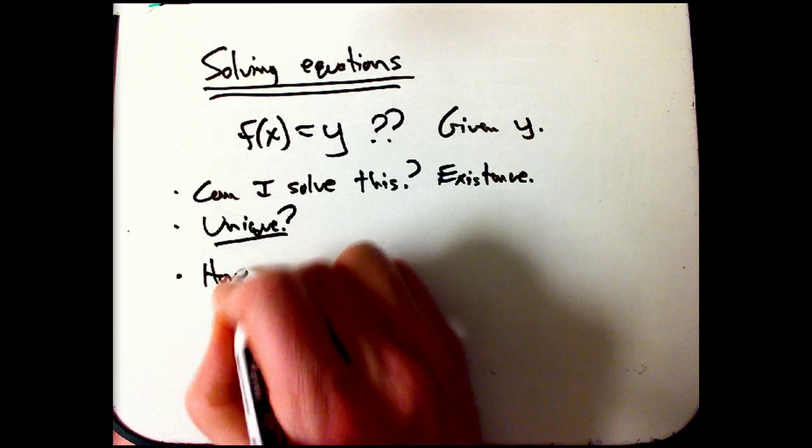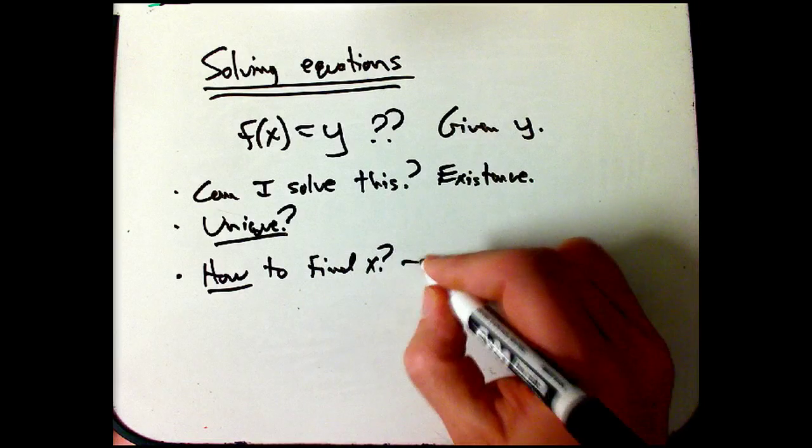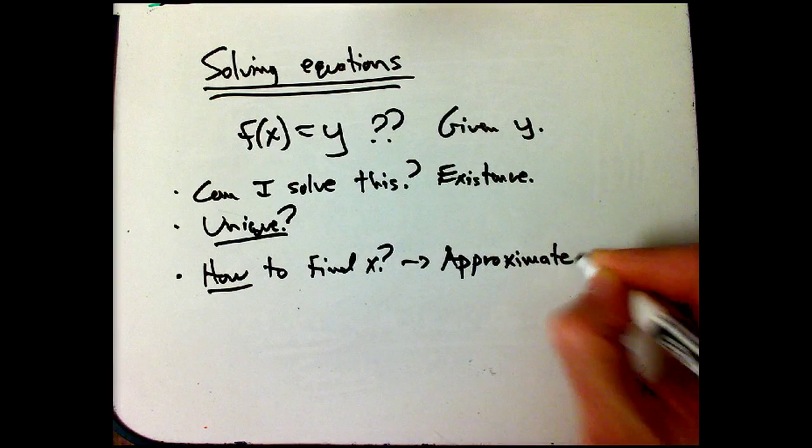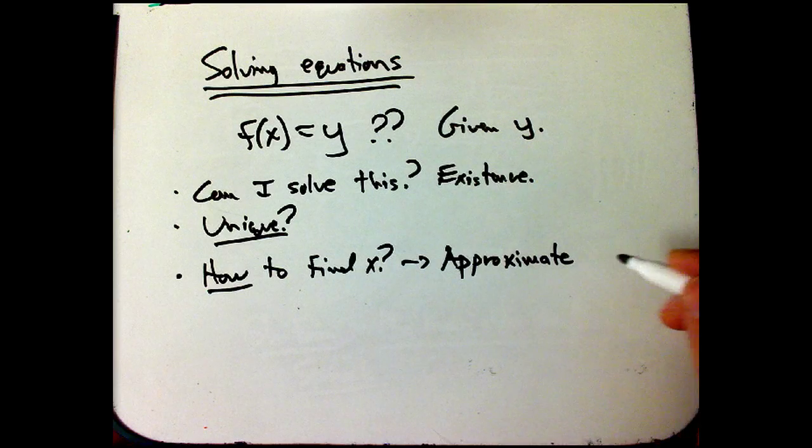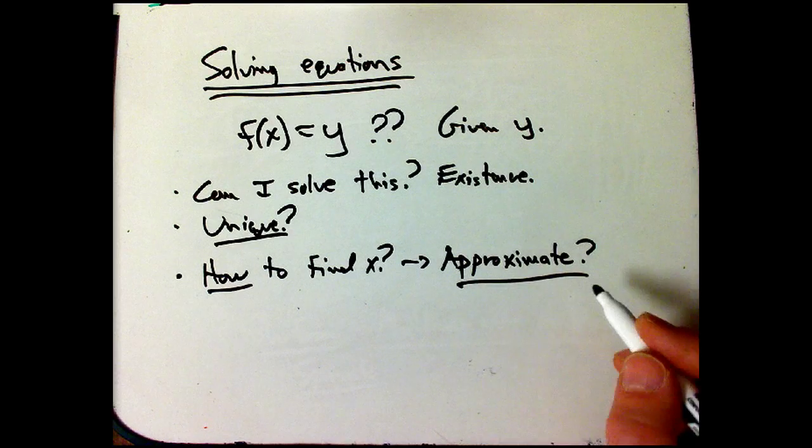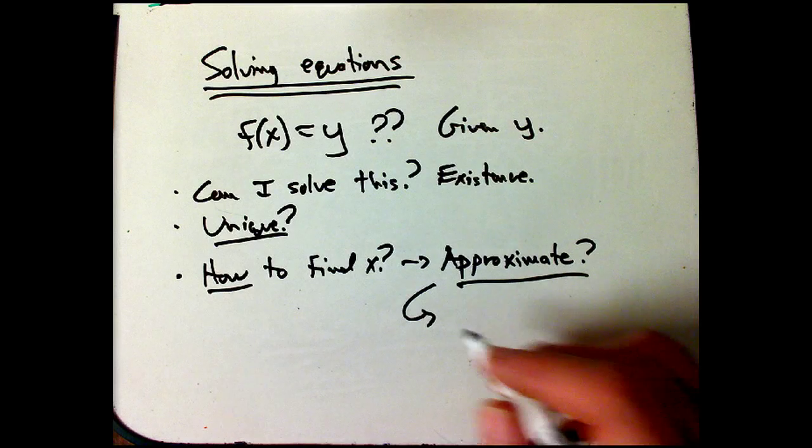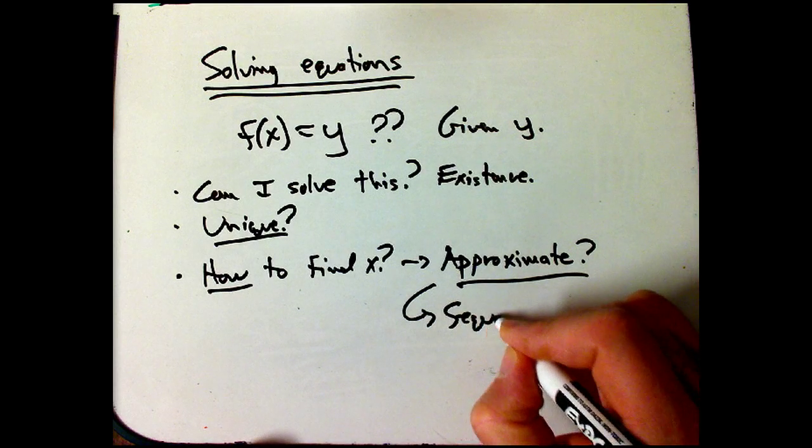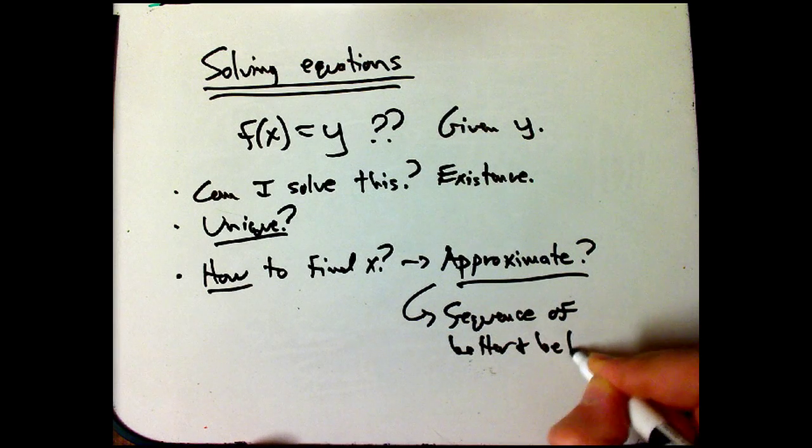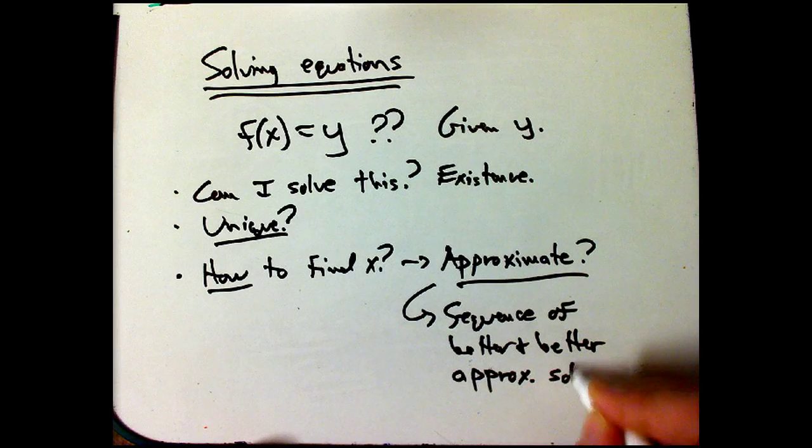And more practically, how to find x, and realistically, how to find an approximate solution. Almost nothing is really exactly soluble in mathematics. It's the disappointing thing you discover once you get past the quadratic formula. And when we say approximate solution, really, we want approximate solution to within any specified error tolerance. And the usual way to do that is to create a sequence of better and better approximate solutions.